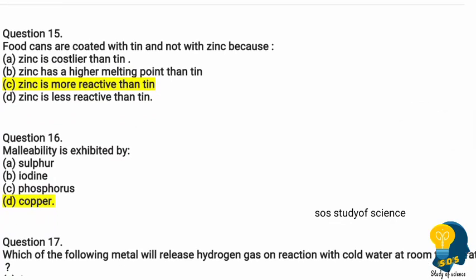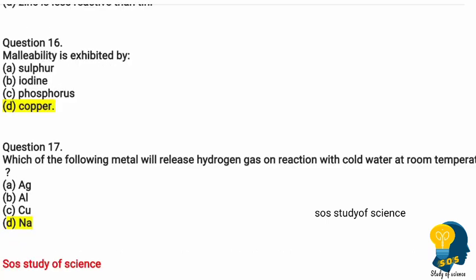Question fifteen: food cans are coated with tin and not with zinc because — option A zinc is costlier than tin, option B zinc has a higher melting point than tin, option C zinc is more reactive than tin, option D zinc is less reactive than tin. The correct answer is option C — zinc is more reactive than tin.